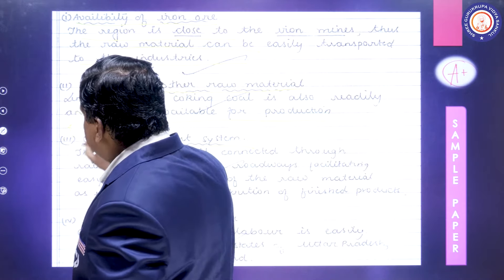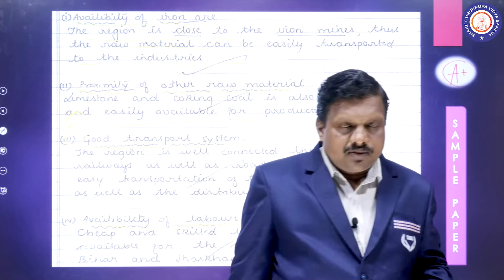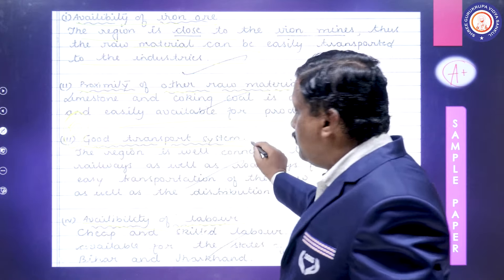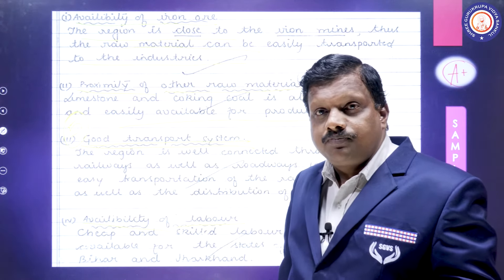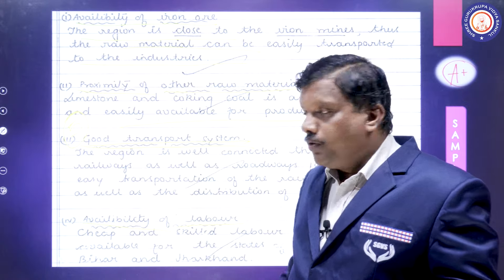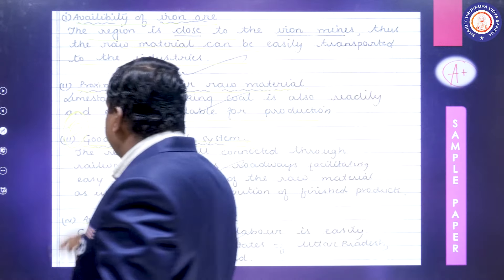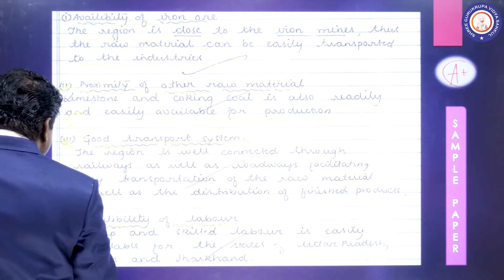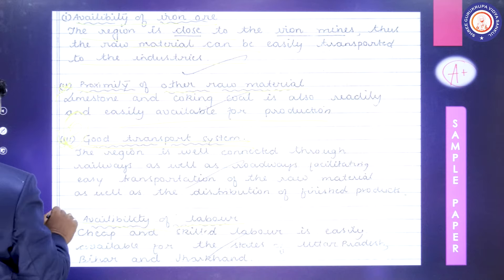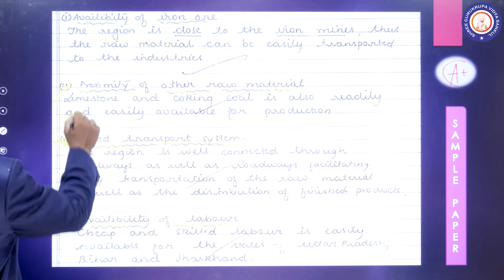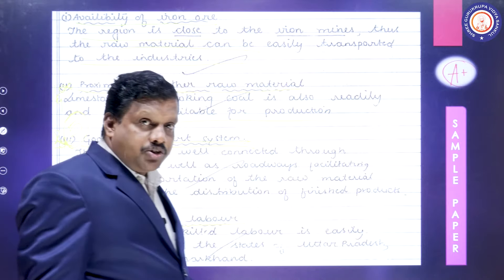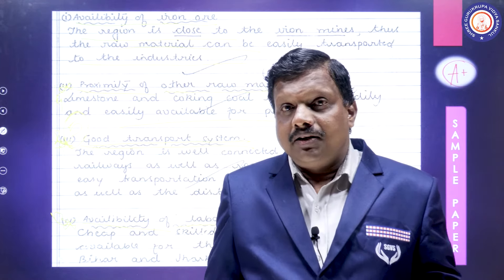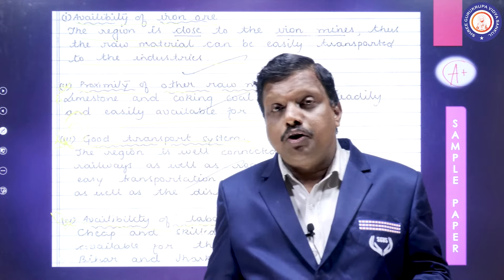If there are no subheadings or points available, you can write in short paragraphs — numbered with stars, 1/2/3, or a/b/c. Make short paragraphs rather than one long paragraph. Divide the paragraph according to the concept — that will be better.